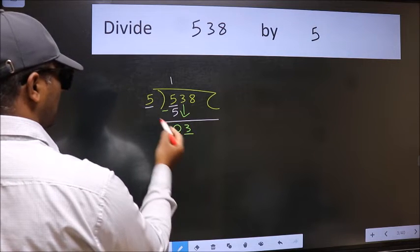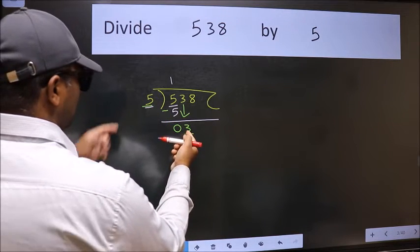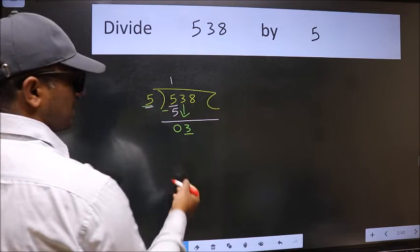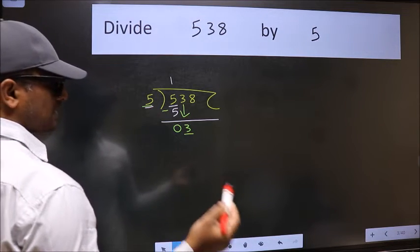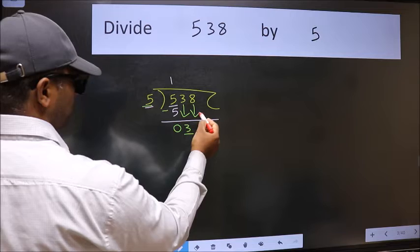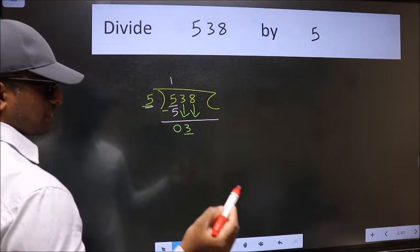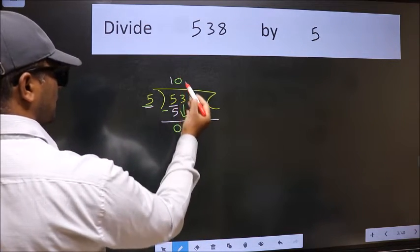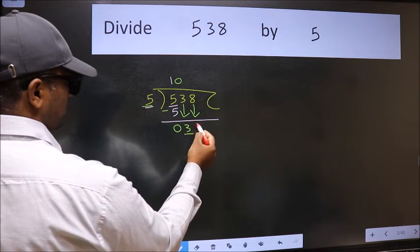Now here we have 3 and here 5. 3 is smaller than 5, so we should bring down the second number. The rule to bring down the second number is we should put 0 here. Then only we can bring this number down.